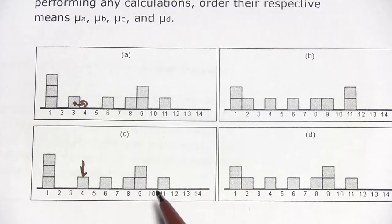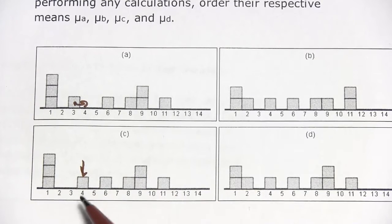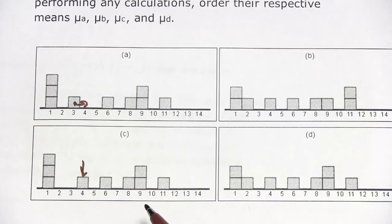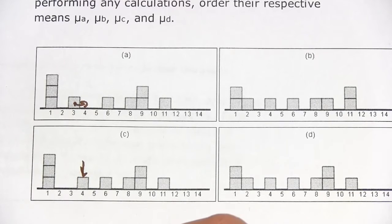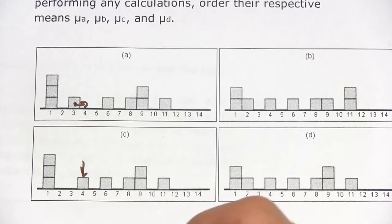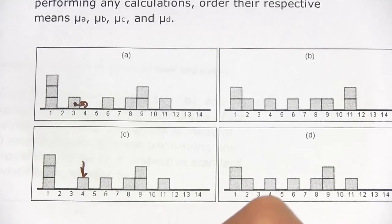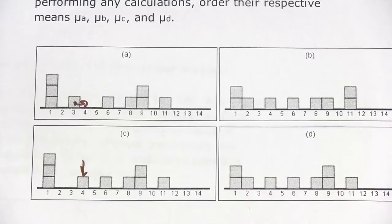When we calculate the mean, we add them all up and divide by the number of numbers. Since one of the numbers is bigger here and everything else is the same, the mean would be bigger. So the mean of c, μc, is going to be greater than μa. That's one thing we can say.